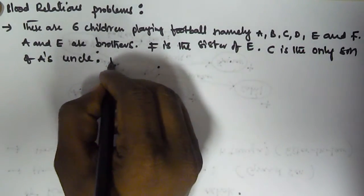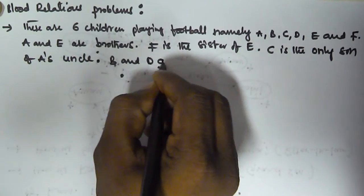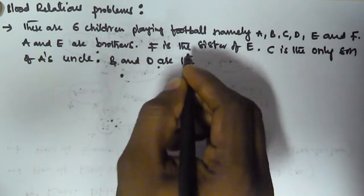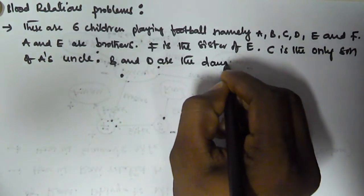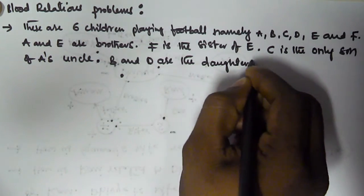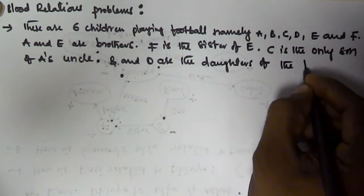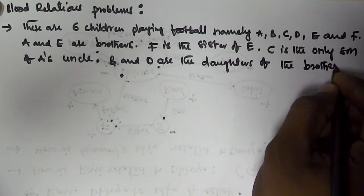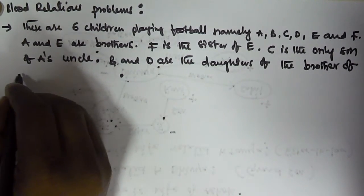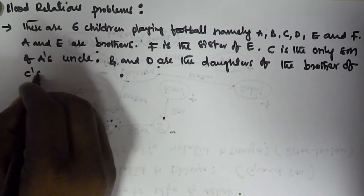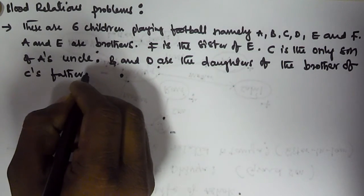B and D are the daughters of the brother of C's father.